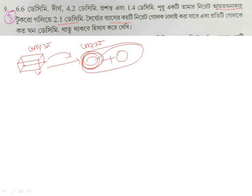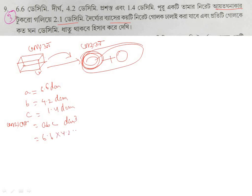So what is being said here — this is a rectangular piece. The height is 1 decimetre. So we can write a, b, c as decimetres: a is 6.6, b is 4.2, c is 1.4 decimetres.